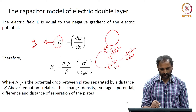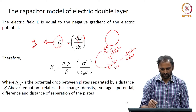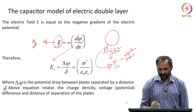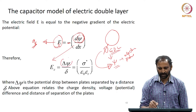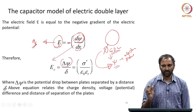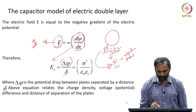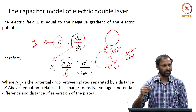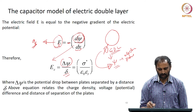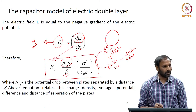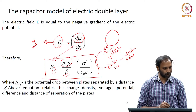The electric field E is given as the negative gradient of the electric potential. Therefore, if I assume that the drop in the potential is very small, I can replace dψ by δψ. Here dx is the distance over which the potential is changing, and δ is the distance between the capacitor plates. This equals σ* divided by (ε₀·εᵣ), where εᵣ is the dielectric constant of the medium between the two plates.